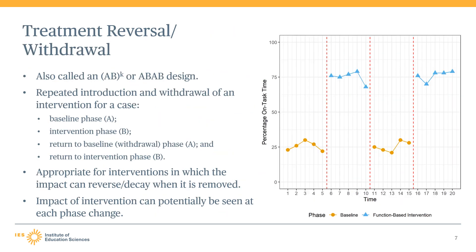The first design we will discuss is the treatment reversal or withdrawal design, characterized by alternating phases without and with the intervention of interest. This design is also sometimes called an AB-K design, where K represents the number of phase pairs. A typical treatment reversal design is an AB-AB design. It begins with a baseline phase (the first A phase), followed by a treatment phase (the first B phase). The transition between the first baseline phase and the first treatment phase represents the first opportunity to demonstrate an intervention effect.